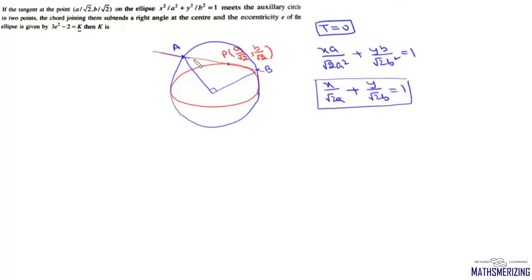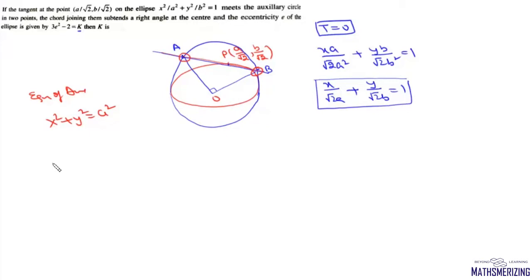Now we have this line and the equation of the auxiliary circle, which is x² + y² = a². We'll find the equation of the pair of lines passing through the origin joining the points of intersection of the auxiliary circle and this tangent line. We do this by making the curve homogeneous using the line x/(√2a) + y/(√2b) = 1, squaring it.